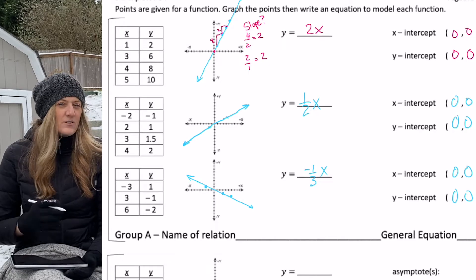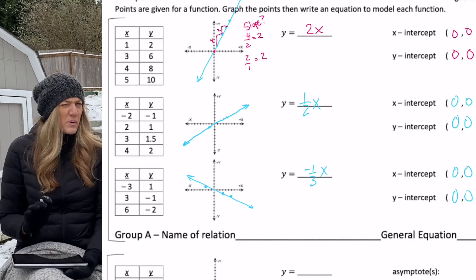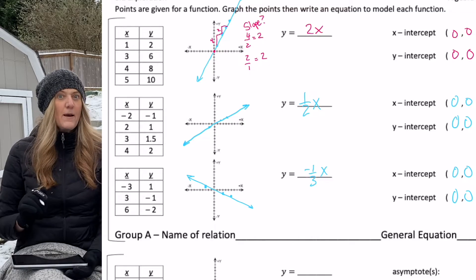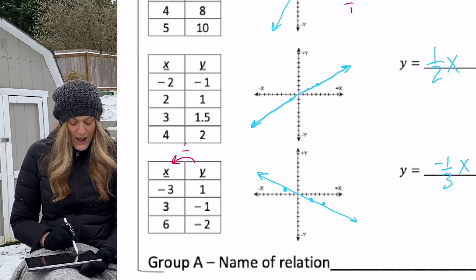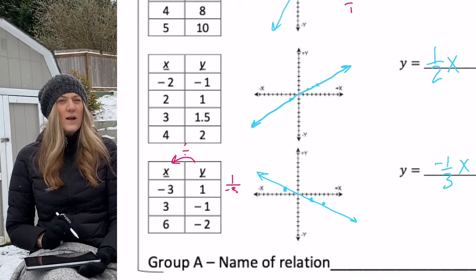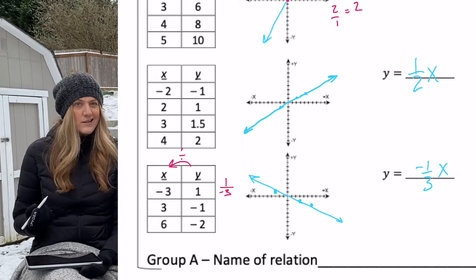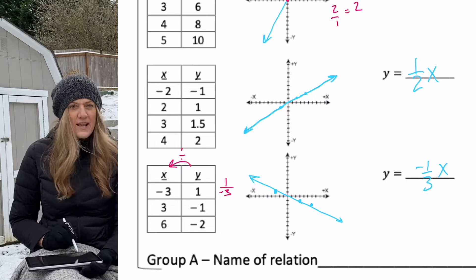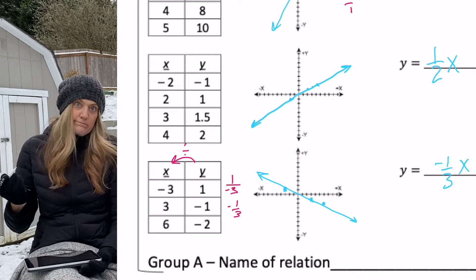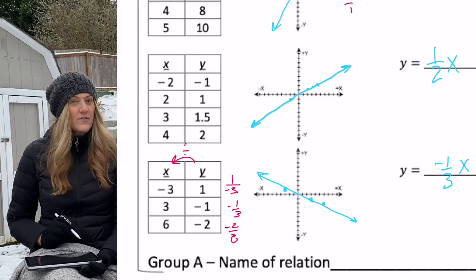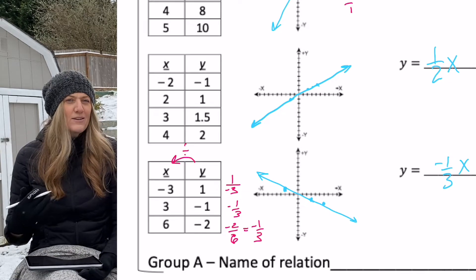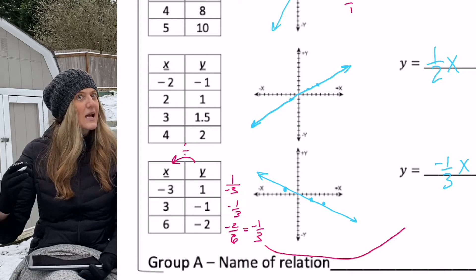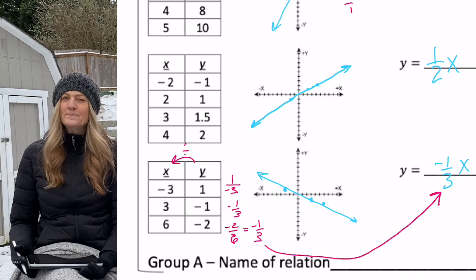We have the points graphed, so we're pretty good at figuring that out. But let's notice something about the points. On my third graph, if I take y and divide by x: 1 divided by negative 3 is negative one-third; negative 1 divided by 3 is negative one-third; and negative 2 divided by 6 is also negative one-third. When I divide the two values I seem to get that slope.